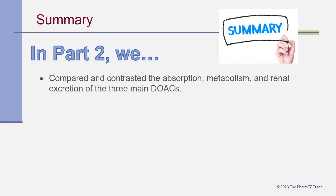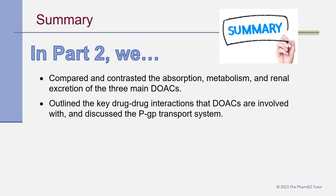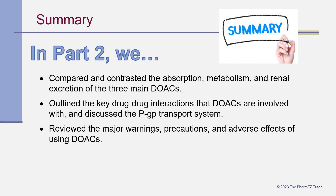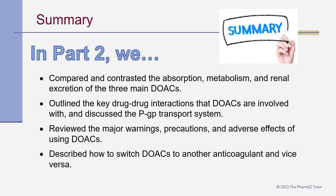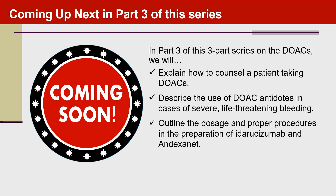In summary, Part 2 compared and contrasted the absorption, metabolism, and renal excretion of the three main DOACs; outlined key drug-drug interactions involving the PGP transport system; reviewed major warnings, precautions, and adverse effects; and described how to switch DOACs to another anticoagulant and vice versa. Coming up in Part 3, we will explain how to counsel patients taking DOACs, describe the use of DOAC antidotes in cases of severe life-threatening bleeding, and outline the dosage and procedures for idarucizumab and andexanet alfa.